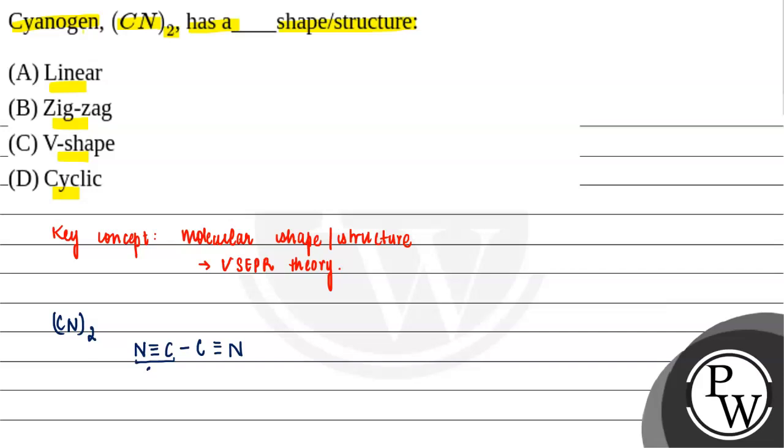—this CN is SP hybridized, and this CN is SP hybridized as well, and it forms a linear structure.